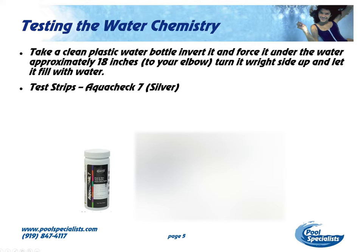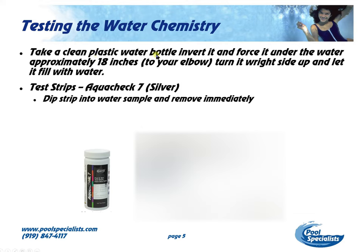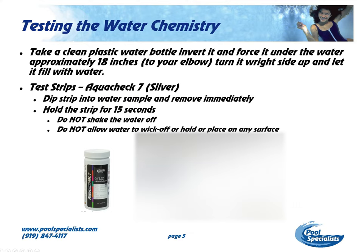They aren't 100% accurate, and what makes it difficult is sizing up what the color on the strip is and comparing it to the chart on the side of the bottle. Once you have your water sample taken from 18 inches below the surface, you're going to dip the strip into the water sample and remove it immediately. Hold that strip for approximately 15 seconds. Do not shake the water off, and do not allow it to wick off by holding it on the side of the bottle or placing it on any surface — that's going to give you an inaccurate reading. Compare it against the chart on the side of the bottle, and for the most part, this is as good as you're going to need.